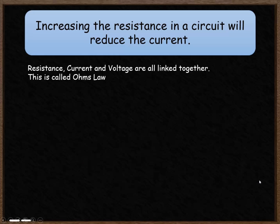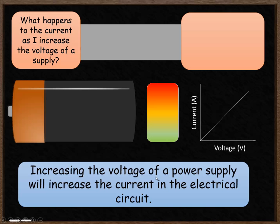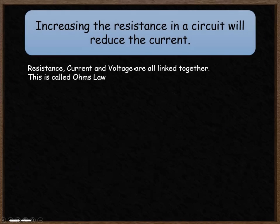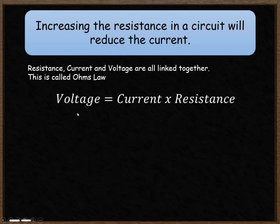However, increasing the resistance in the circuit is going to reduce that current. Whereas increasing the voltage increases the current, increasing the resistance is going to reduce the current, because those electrons are slowed down as resistance increases. These three things — resistance, current, and voltage — are all linked together, and it's called Ohm's Law. The voltage in a circuit is equal to the current multiplied by its resistance.